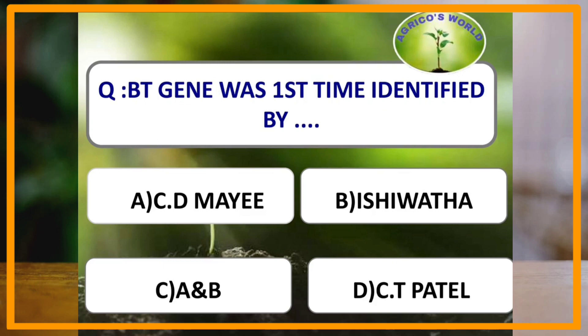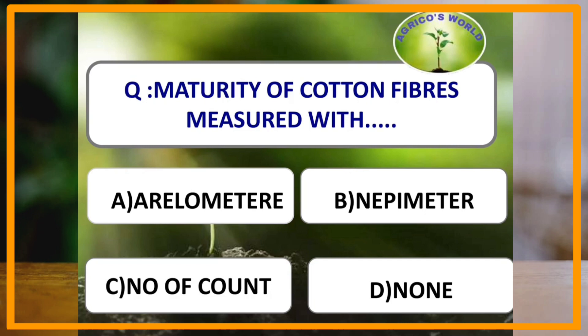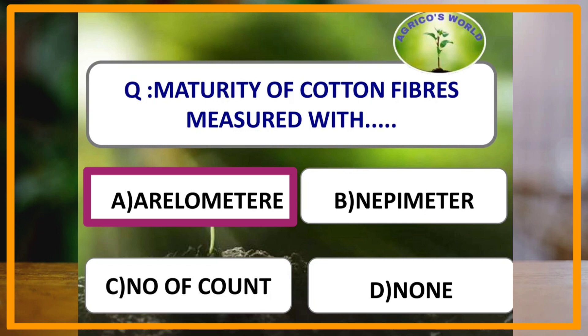The BT gene was first time identified by which of the following scientist? The BT gene was first time identified by the scientist Ishiwata. Maturity of cotton fibers is measured with which of the following instruments? Maturity of cotton fibers is measured by an aerolometer, and the nippy meter is used to determine fiber fineness.